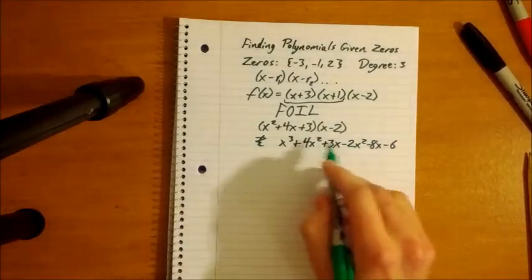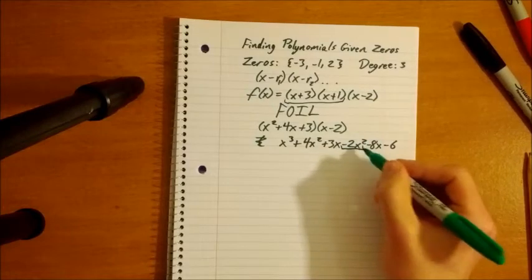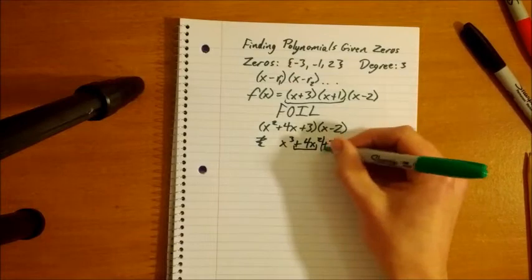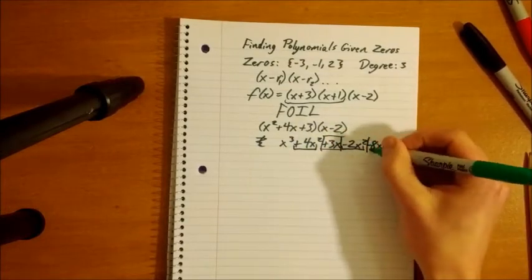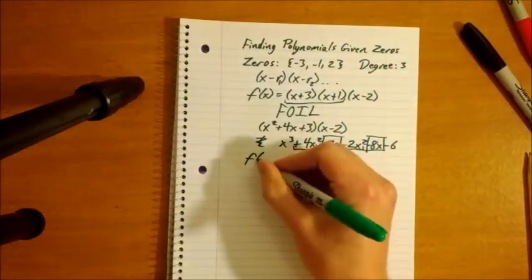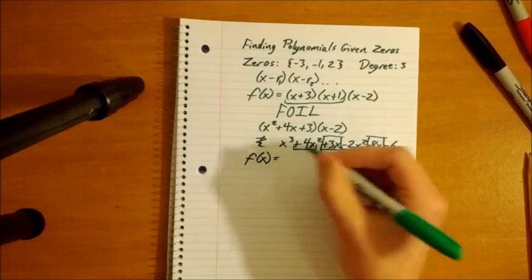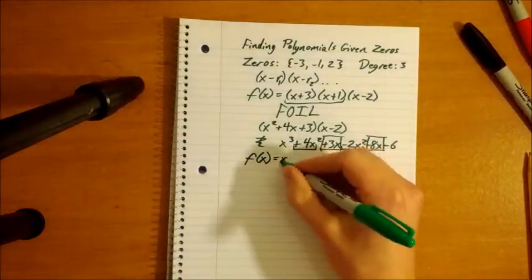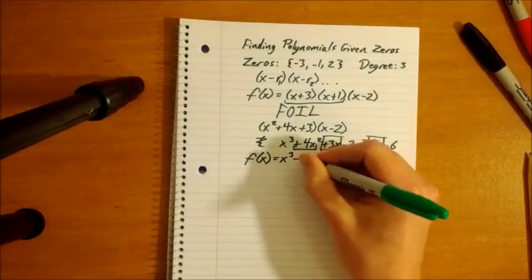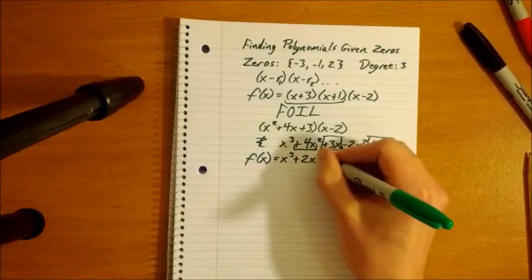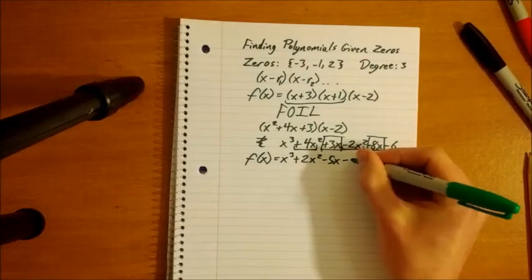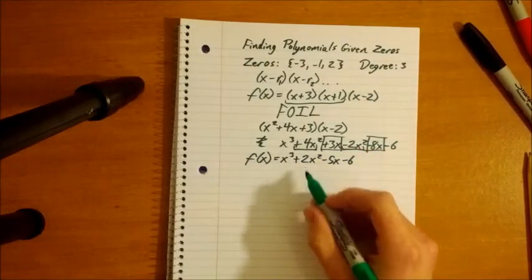And then we can combine like terms. So, like terms, we have x squareds, so there's a 4x squared and a negative 2x squared. And we have a 3x and a negative 8x. And then we have our final answer, as Regis Philbin might say, on Who Wants to Be a Millionaire. So, x cubed, and 4x squared minus 2x squared is positive 2x squared, 3x minus 8x will be negative 5x, and negative 6. And that's your answer, right there.